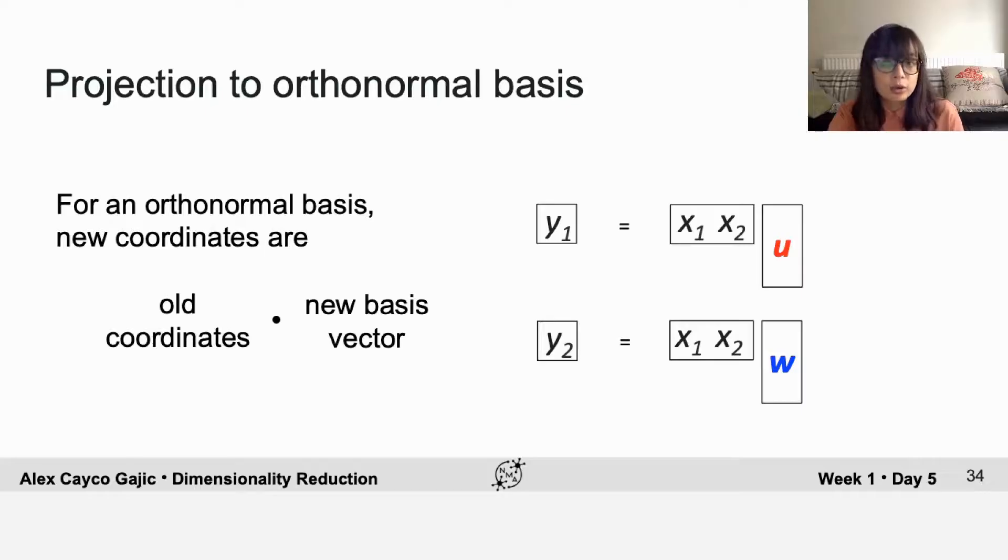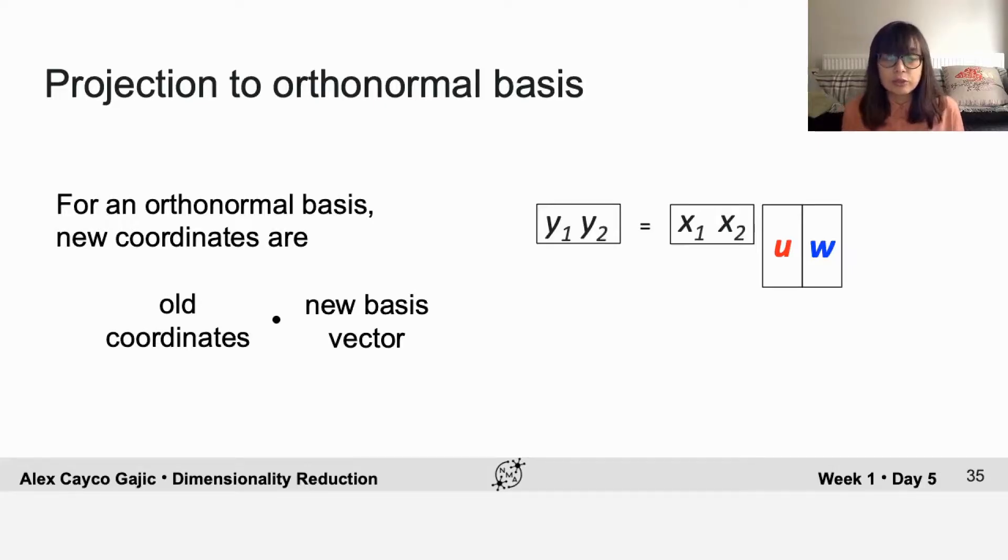So again, for an orthonormal basis, your new coordinates are the old coordinates dot the new basis vector. And on the right, I wrote that into equations, but you can actually put them together to have a more reduced form. And if you have more samples, then you can just add those samples as rows.